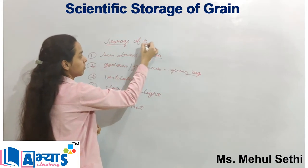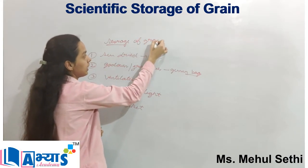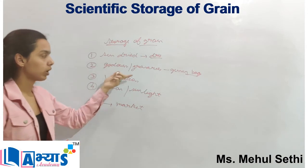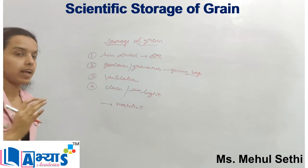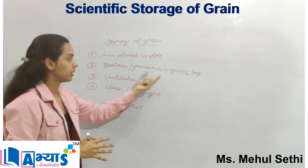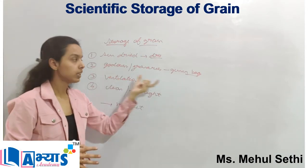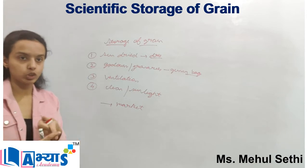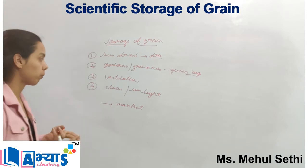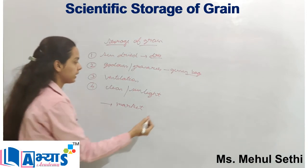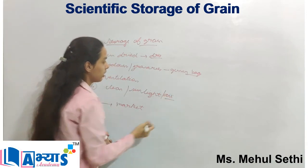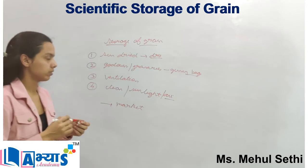There should be proper methods followed for storage of grains. Large-scale storage is done in go-downs or granaries, where seeds are kept in gunny bags. Proper ventilation, air, and sunlight should be present in those granaries.